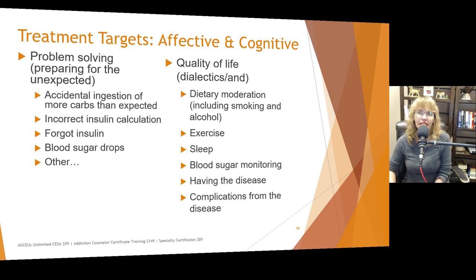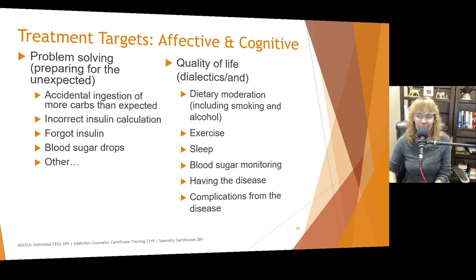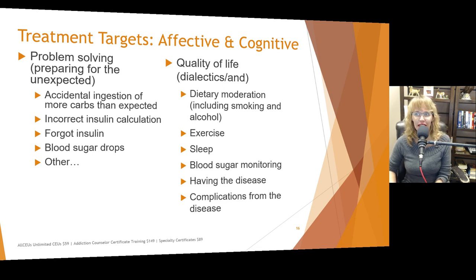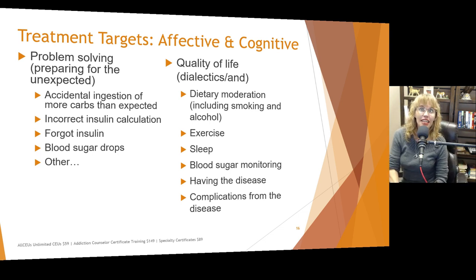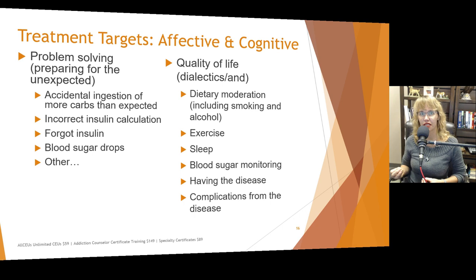Another thing we need to help people explore cognitively is their quality of life. Some people get a diabetes diagnosis and feel like the walls are closing in on them. Dietary moderation including smoking and alcohol are important for managing diabetes, but let's talk about how they can have a high quality of life and comply — this is where the dialectics come in — have a high quality of life and comply with the recommendations of the physician and dietician.